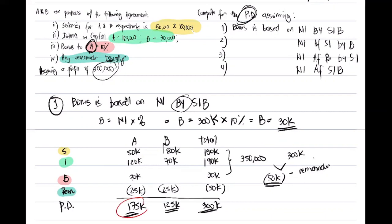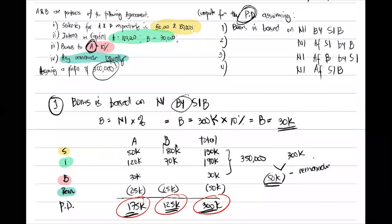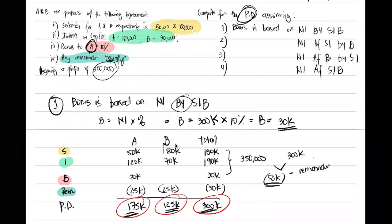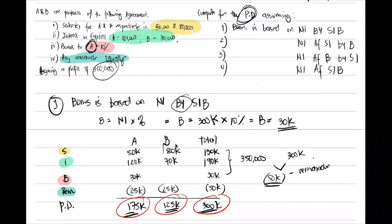Note: we are not only computing for bonus here, but incorporating the full profit distribution. Since there is no hierarchy, you can just distribute everything — even if the remainder becomes negative. If there is no hierarchy or no order of priority, that is the rule for Assumption 1 where bonus is based on net income before salaries, interest, and bonus.